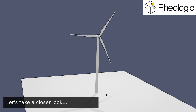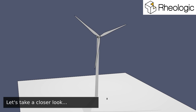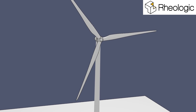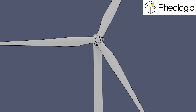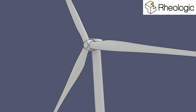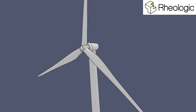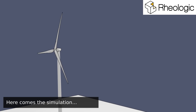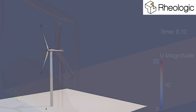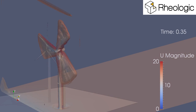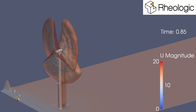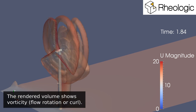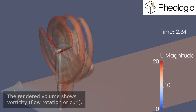Let's take a closer look. Here comes the simulation. The rendered volume shows vorticity — flow rotation or curl.